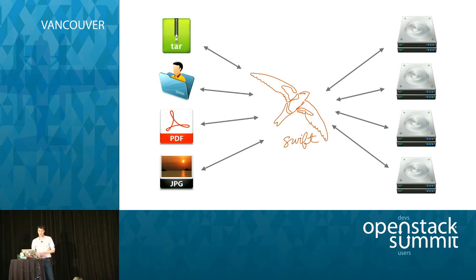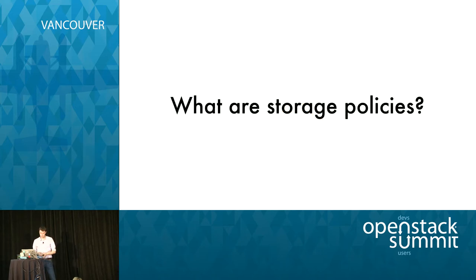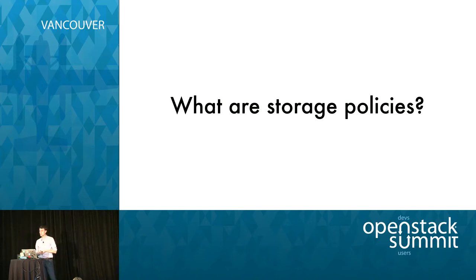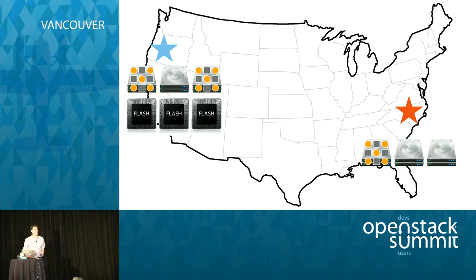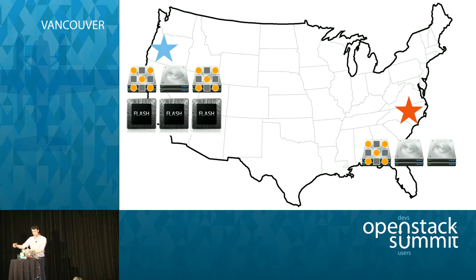There are a couple of huge features we wrote over the last couple of years that made some really cool improvements to Swift. The first one is called Storage Policies — a really cool feature. The basic idea is that you as the deployer are able to expose differences in your hardware: things like location, different performance tiers, geographic isolation or locality. The operator can expose heterogeneous hardware differences to the end user.